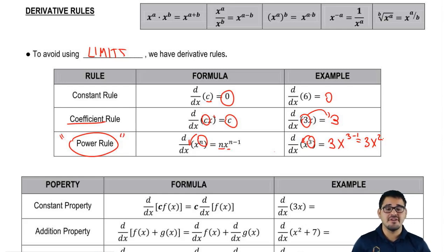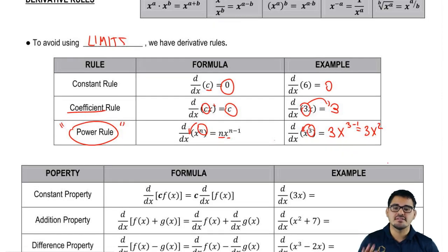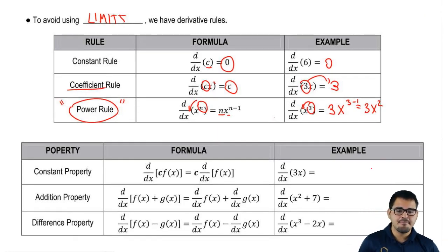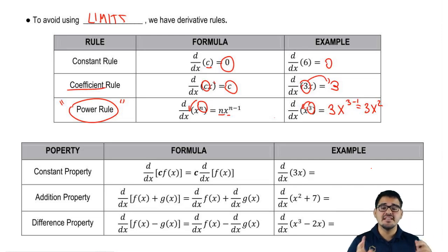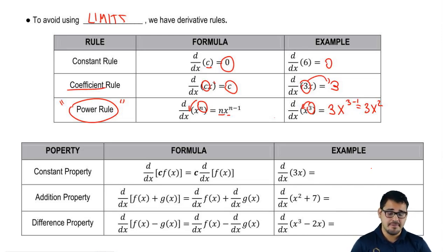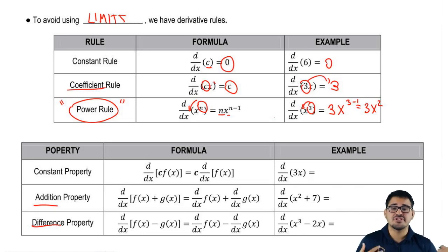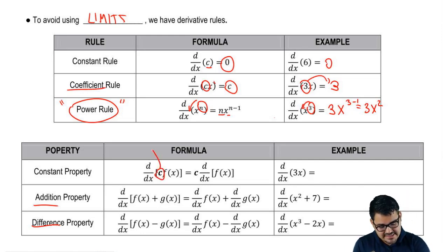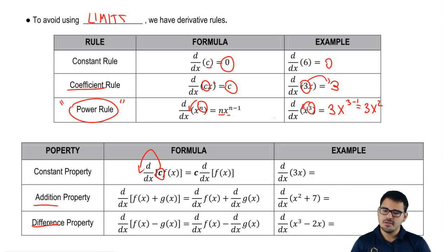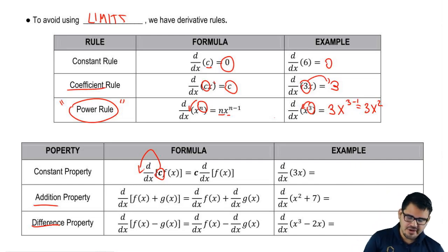If you guys remember, finding the derivative of anything squared the long way was just way too long — we had to foil. Now let's look into some properties. The difference between the rules and the properties is that these properties actually remind you of limits. When we did limits, we talked about linear properties — when we have a constant inside or outside our derivative. We also have the addition property and the difference property for when we have subtraction. So the first one is the constant property.